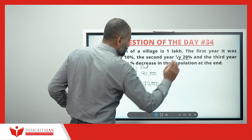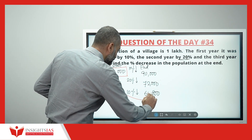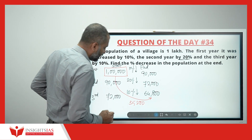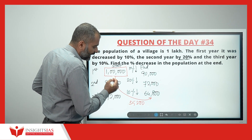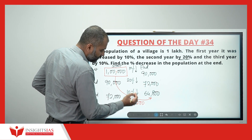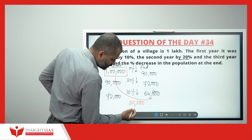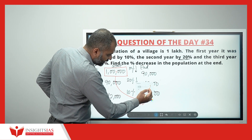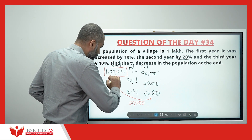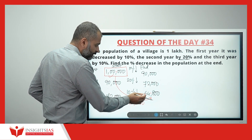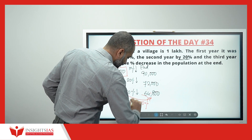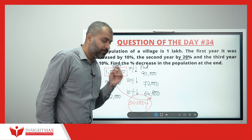The question asks for the percentage decrease in population. 35,200 has been decreased. For 1 lakh, if it becomes 64,800, then for 100 it becomes 64.8. So the decrease is 35.2. Anything compared to 100 becomes a percentage, so the percentage decrease is 35.2.